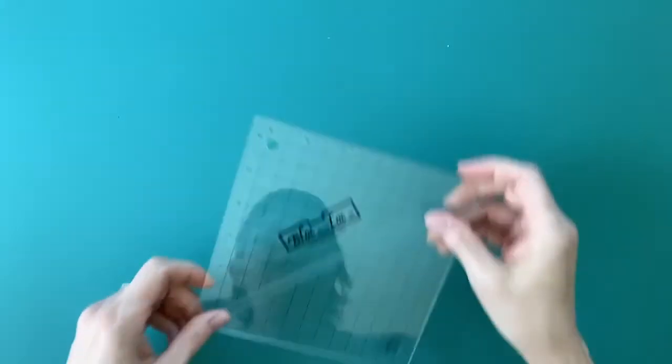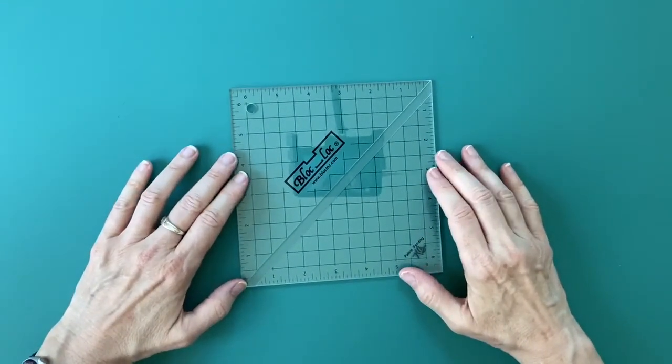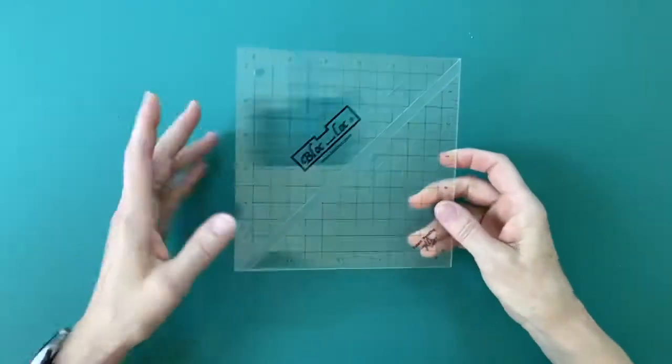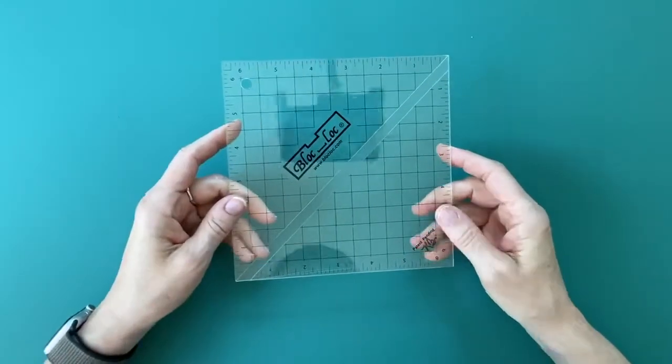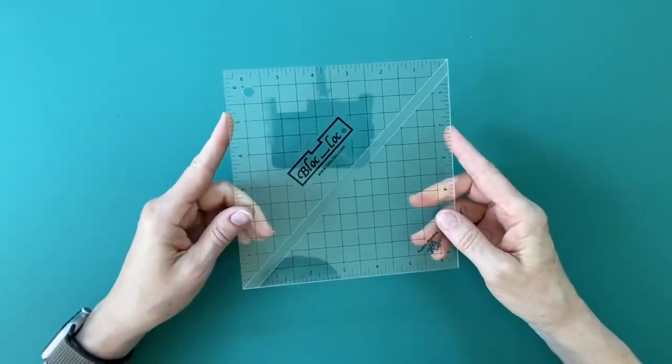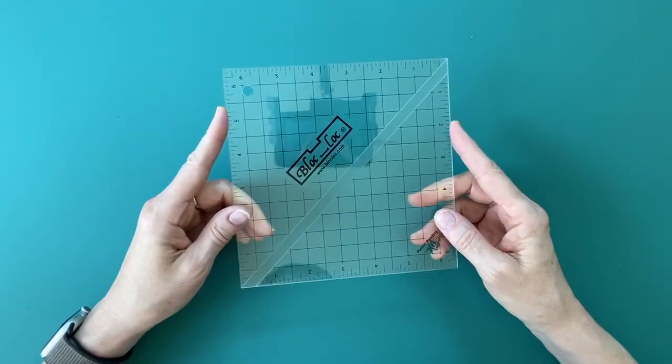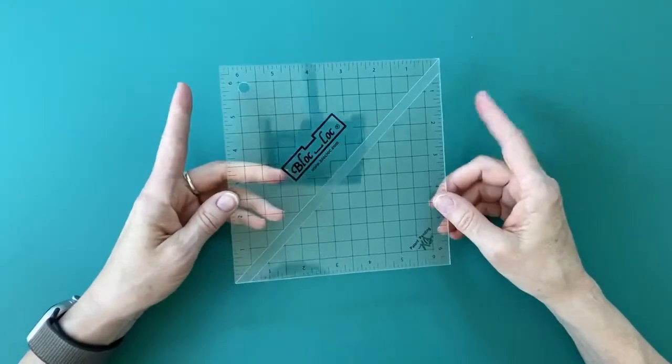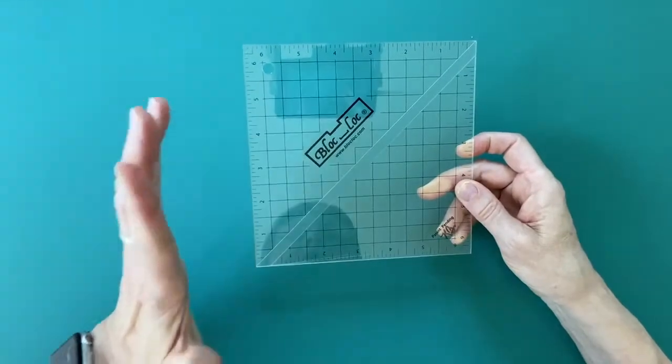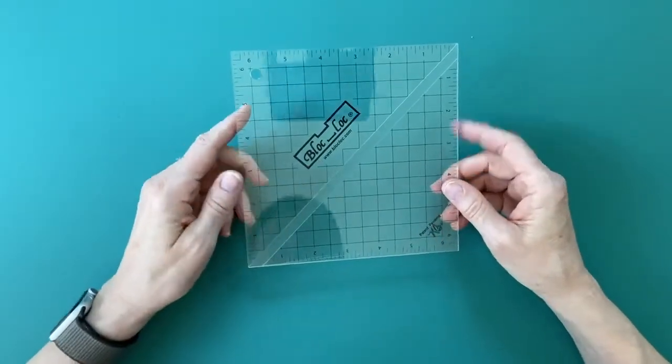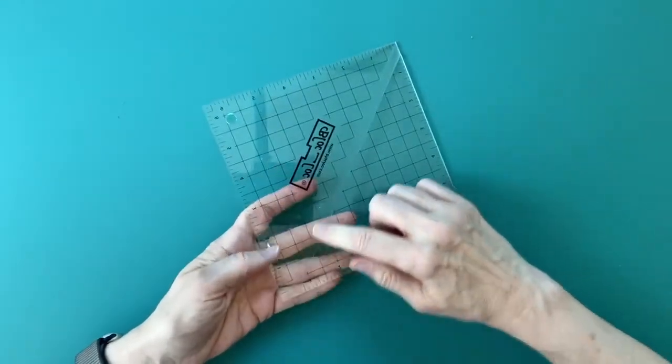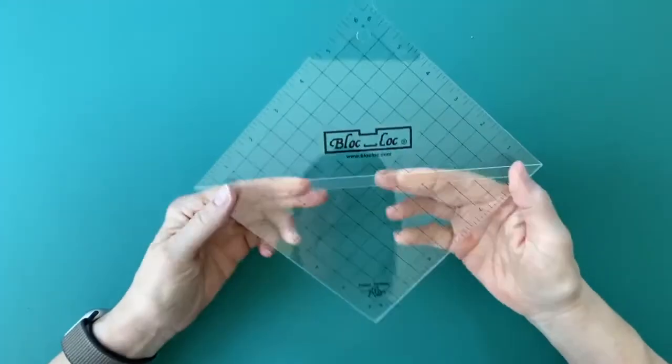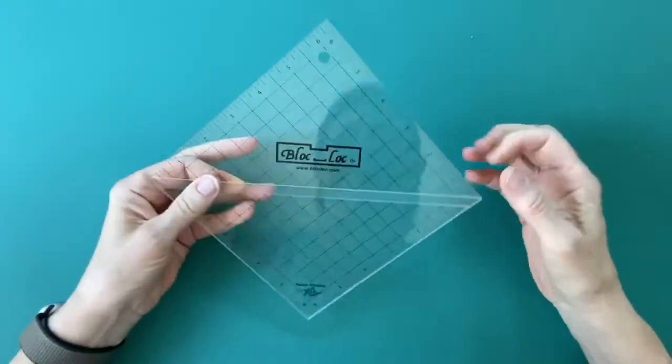Number four is Block Lock. Again, I have no affiliation with any ruler companies or any quilt related company for that matter. But the thing about the Block Locks, this is a half square triangle ruler and they also have flying geese, kite shapes, drunkard's path of various sizes. They have a whole collection of rulers to help you size up your blocks into perfectly sized blocks. The Block Lock rulers have a channel cut in the back of them. It's a quarter inch wide and it's about three fabric thicknesses deep.